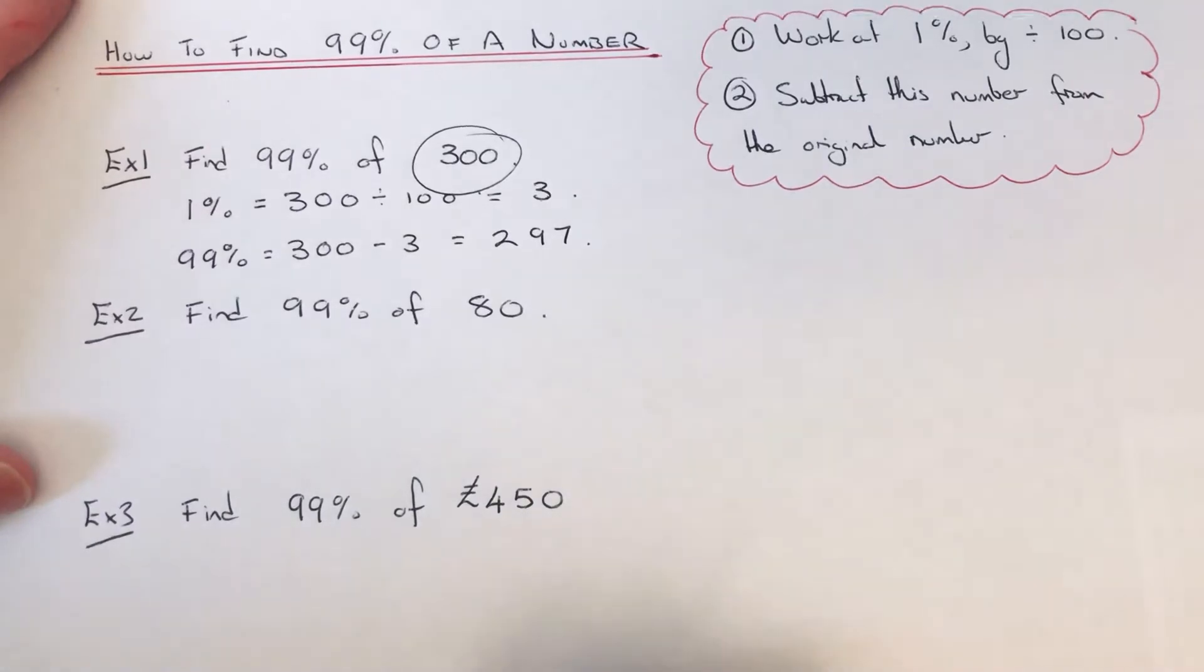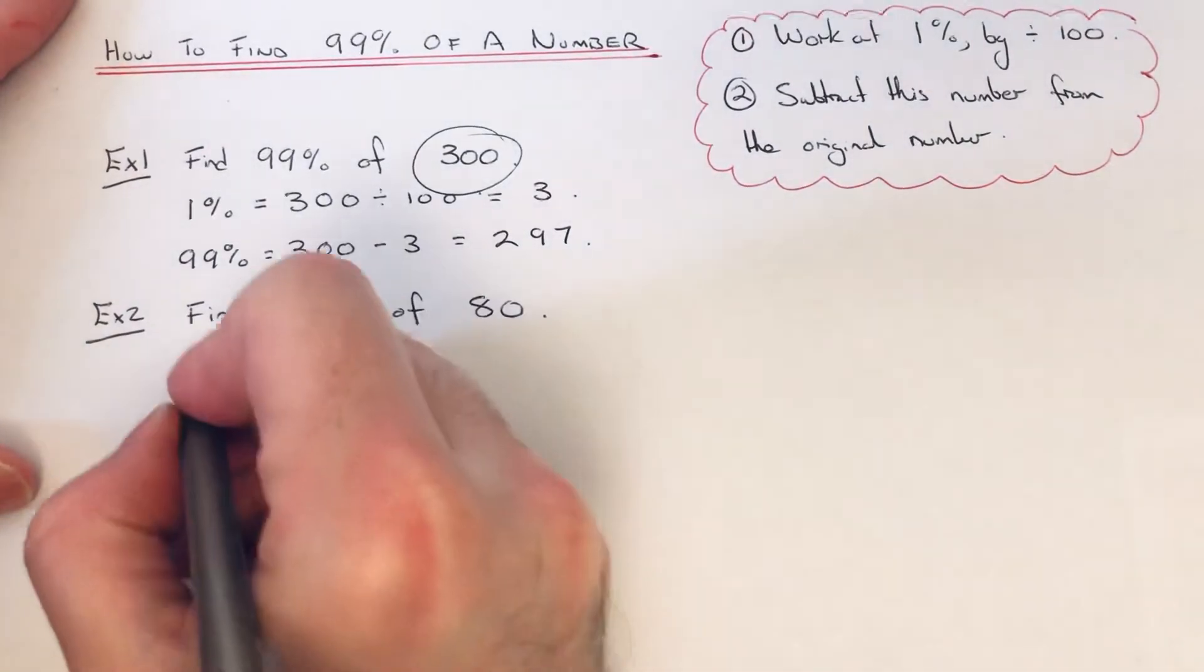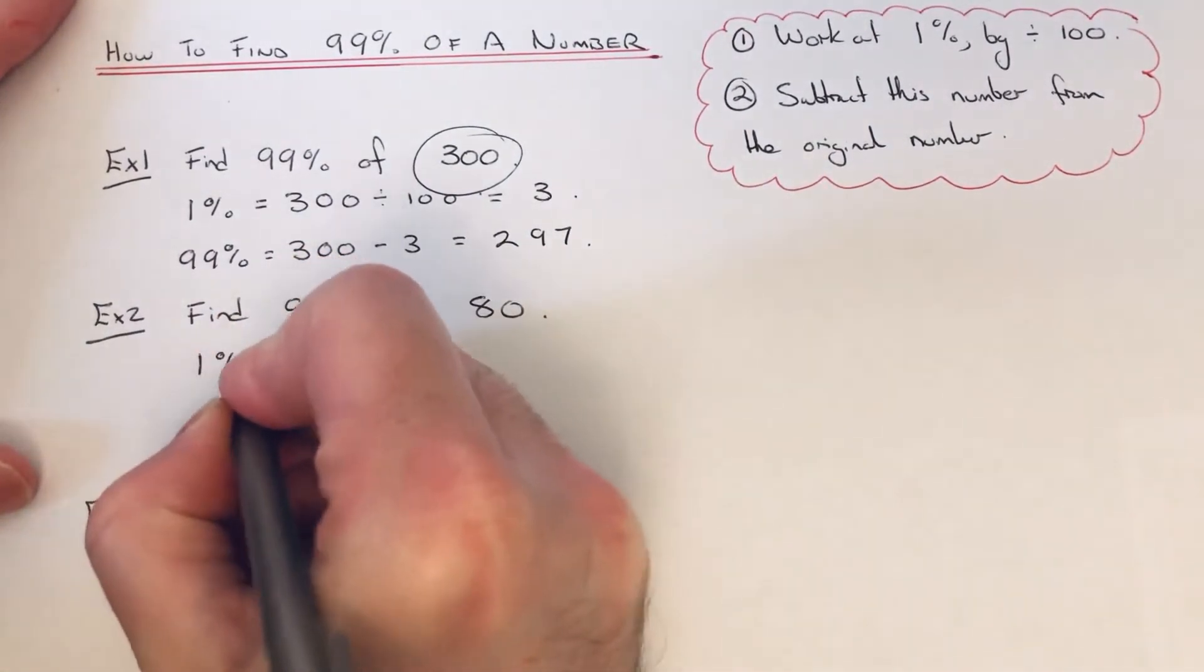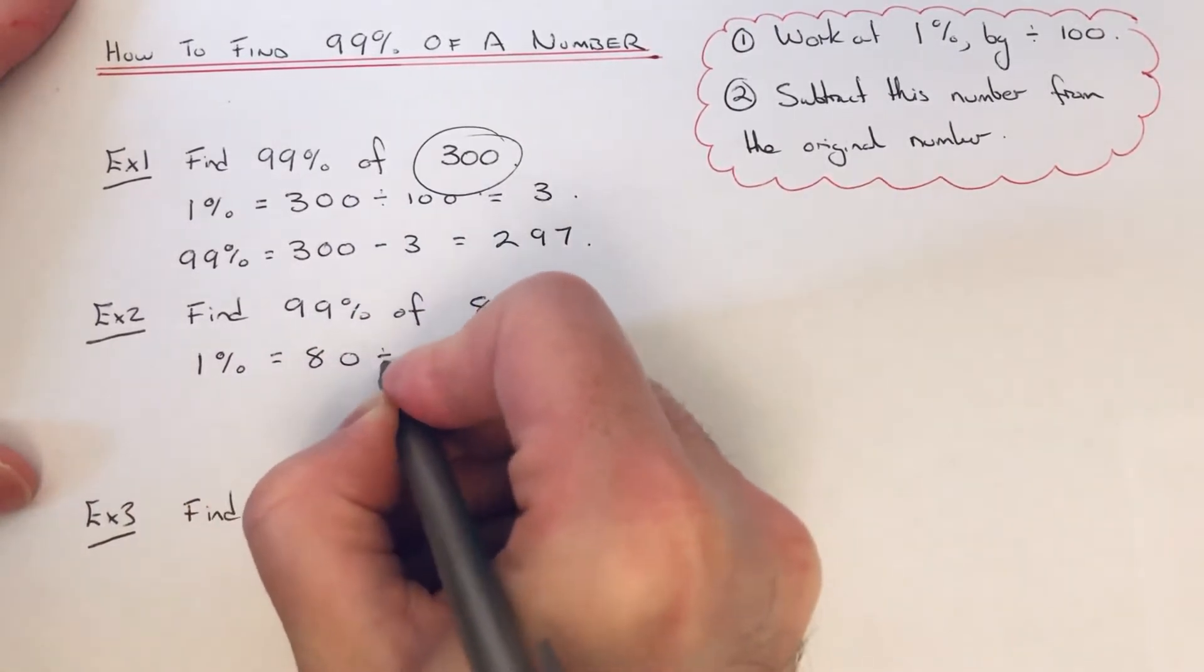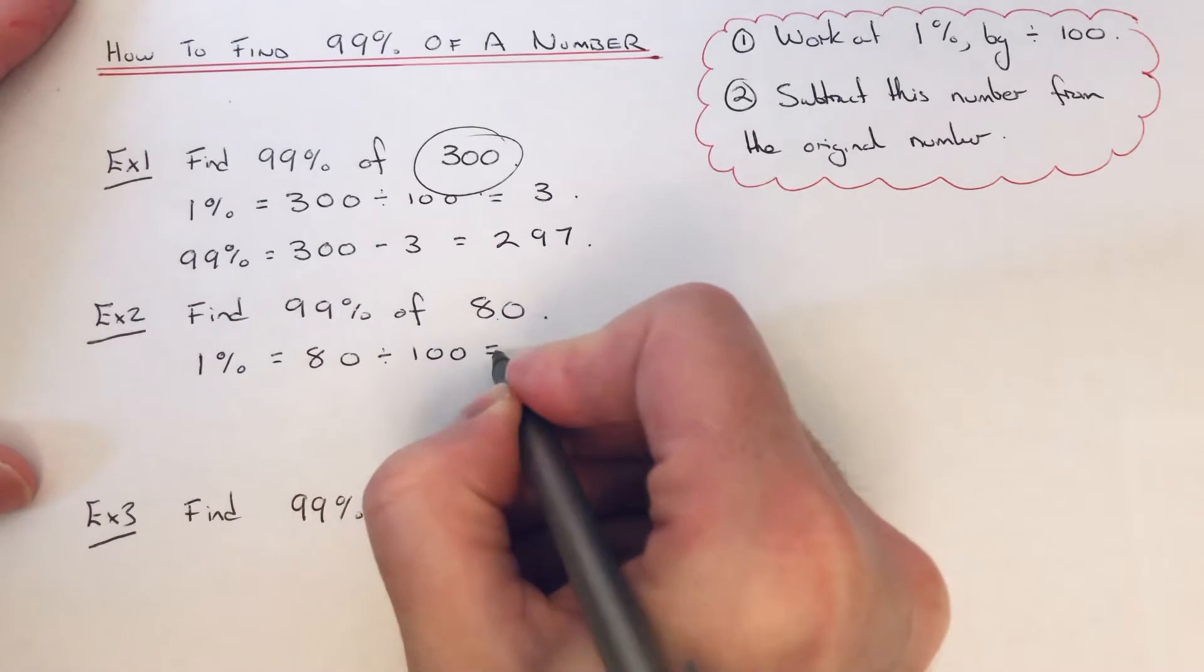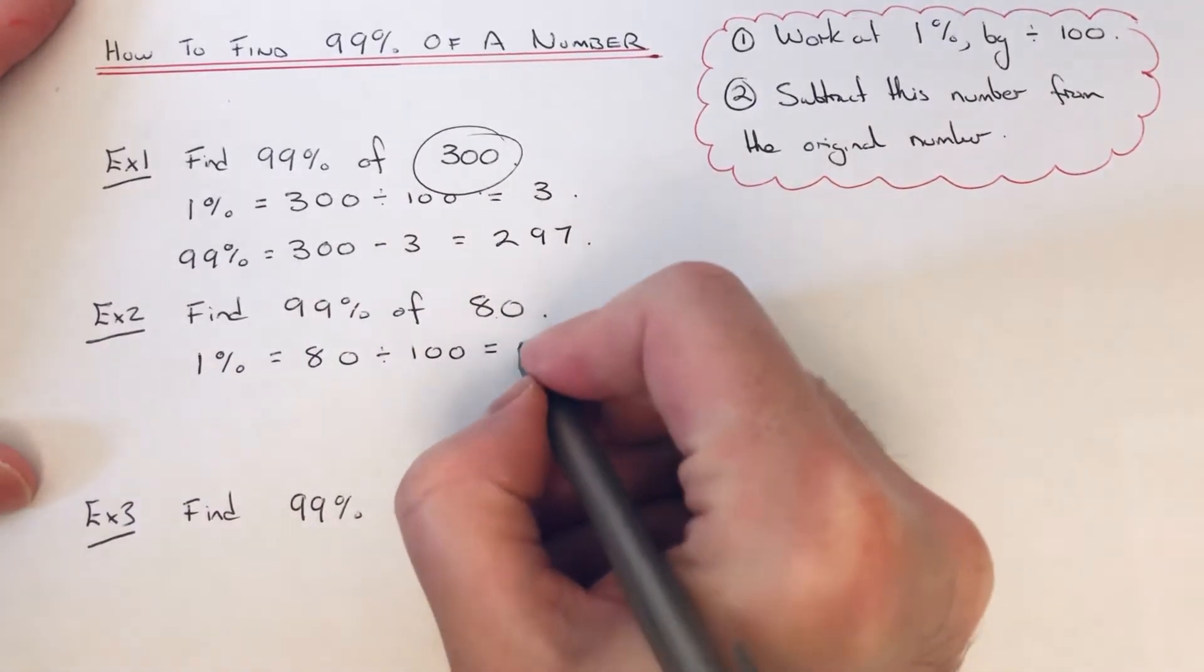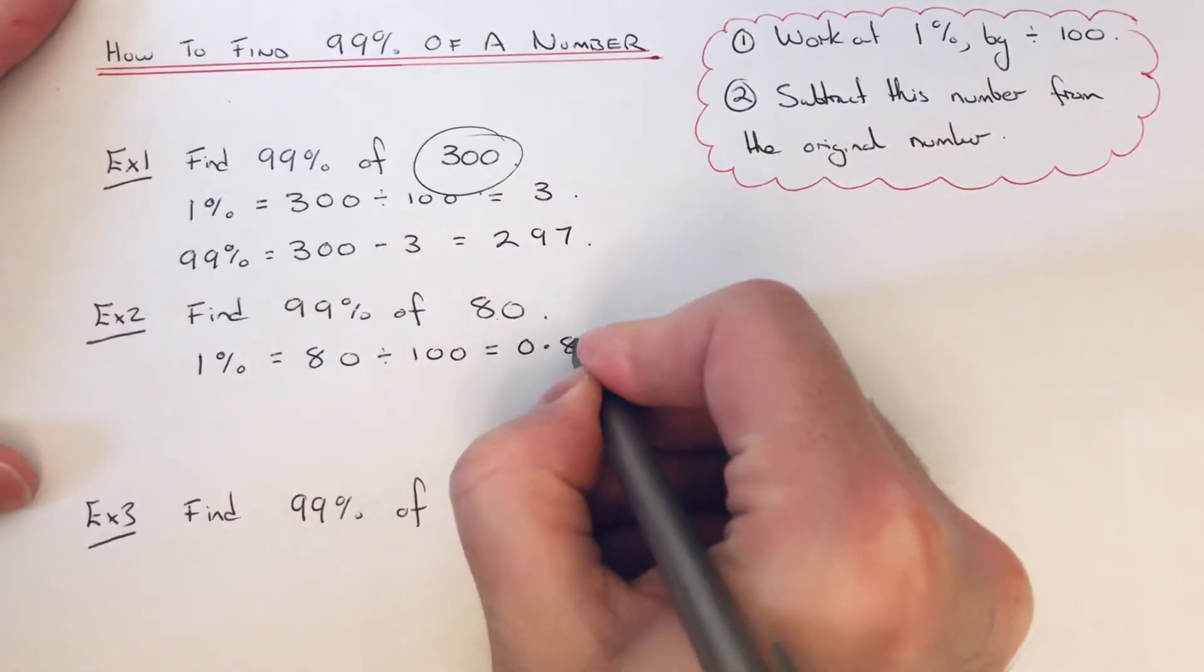This time we need to work out 99% of 80. So again we start off with 1%. So if we divide 80 by 100, 80 divided by 100 is 0.8.